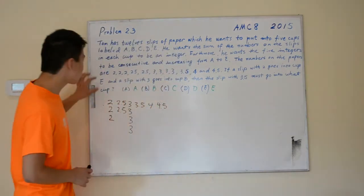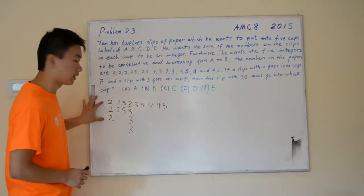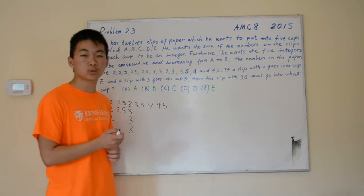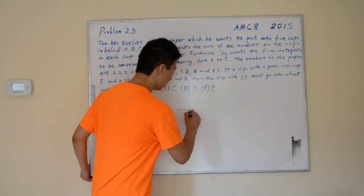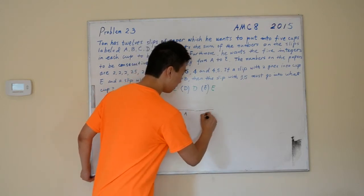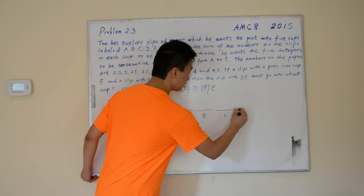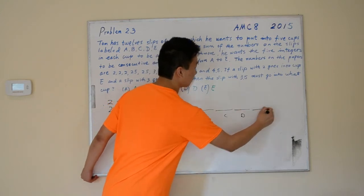I've reorganized these 12 numbers right here. And these 12 numbers are to go into 5 cups: cup A, cup B, cup C, cup D, and cup E.